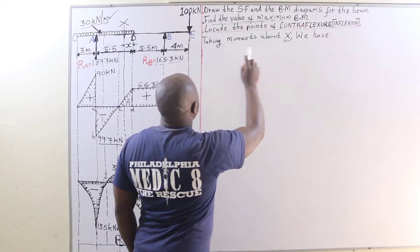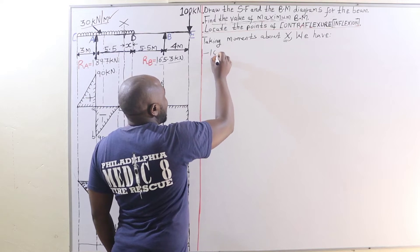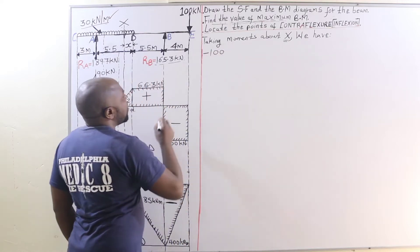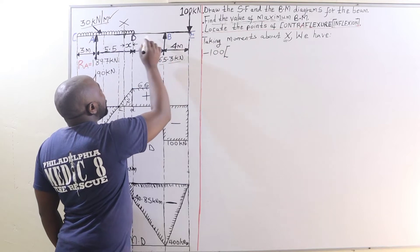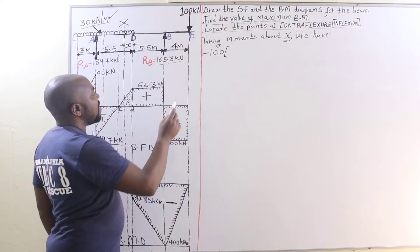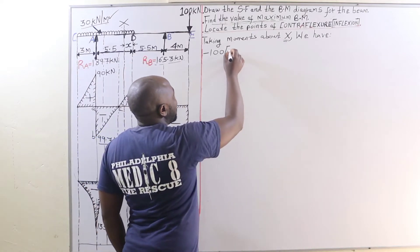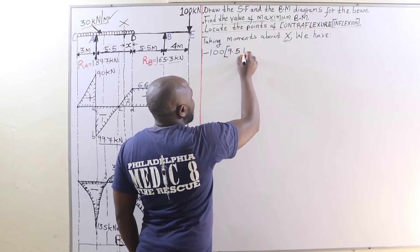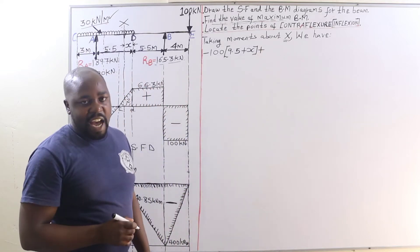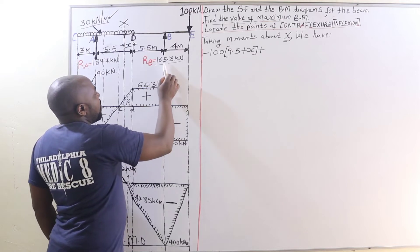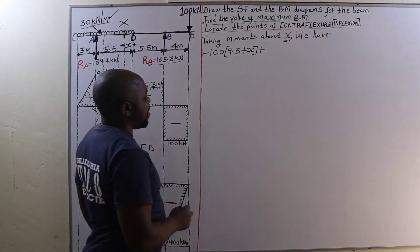To locate this point we are going to take moments about point x. We will have negative 100 kilonewtons at point E, times the distance from E all the way to x, which is 9.5 plus x meters.